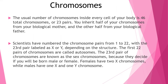The usual number of chromosomes inside every cell of your body is 46 total chromosomes, or 23 pairs. You inherit half of your chromosomes from your biological mother and the other half from your biological father. Scientists have numbered the chromosome pairs from 1 to 22, with the 23rd pair labeled as X or Y depending on the structure. The first 22 pairs of chromosomes are called autosomes. The 23rd pair is known as the sex chromosomes, because they decide if you will be born male or female. Females have two X chromosomes, while males have one X and one Y.